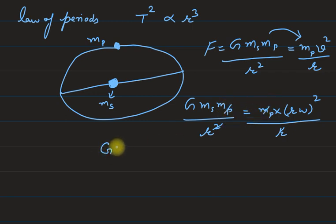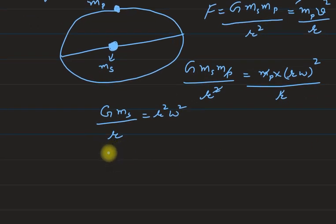We are left with G into mass of sun upon r, and it is equal to r² omega². Omega is the angular velocity of the planet. We know that omega angular velocity is basically equal to 2π by capital T, where capital T is the time period of that planet.